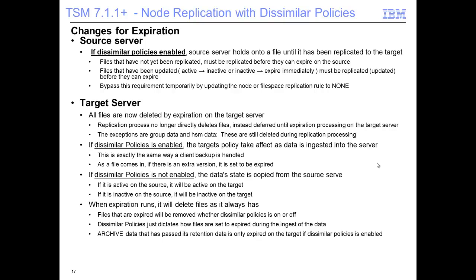On the target server, the replication process itself no longer directly deletes files. Instead, deletion is deferred until expiration processing on the target server runs. If dissimilar policy is enabled, the target policy takes effect as data is ingested into the target server — just like how backups work now: when a backup occurs, it's automatically given its expiration policy. So if there are extra versions of a file, once a replicated file is sent over, they'll be marked for expiration right away. If dissimilar policy is not enabled, then the data state is copied from the source server — if it's active on the source, it'll be active on the target; if it's inactive on the source, it'll immediately be marked inactive on the target. Expiration will then run on the target server and clean up files marked for expiration.